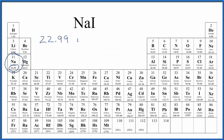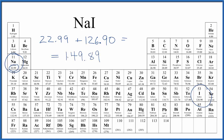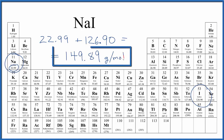Then we add the iodine. We have one iodine atom — iodine is 126.90, units grams per mole. So we add these two numbers together and we get 149.89 grams per mole.